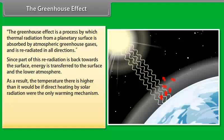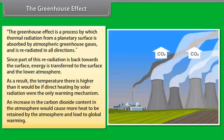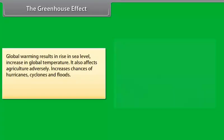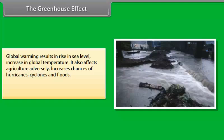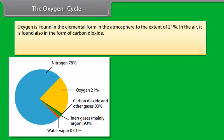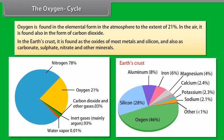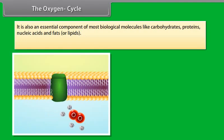The greenhouse effect. The greenhouse effect is a process by which thermal radiation from a planetary surface is absorbed by atmospheric greenhouse gases and is re-radiated in all directions. Since part of this re-radiation is back towards the surface, energy is transferred to the surface and the lower atmosphere. As a result, the temperature there is higher than it would be if direct heating by solar radiation were the only warming mechanism. An increase in the carbon dioxide content in the atmosphere would cause more heat to be retained by the atmosphere and lead to global warming. Global warming results in rise in sea level, increase in global temperature. It also affects agriculture adversely, increases chances of hurricanes, cyclones and floods. Increase in temperature and humidity may cause increase in disease.